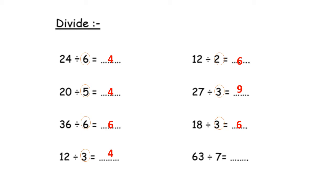63 divided by 7. Circle the number after the sign — the number here is 7. So I will sing the song of table 7 until I get 63. Close your fingers: 7, 14, 21, 28, 35, 42, 49, 56, 63. You are now open 9 fingers. So the answer will be 9.